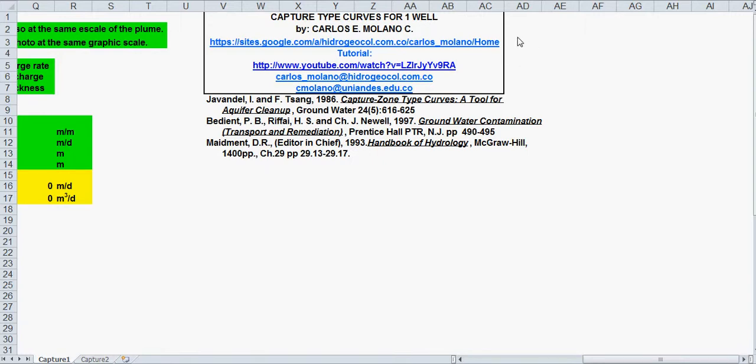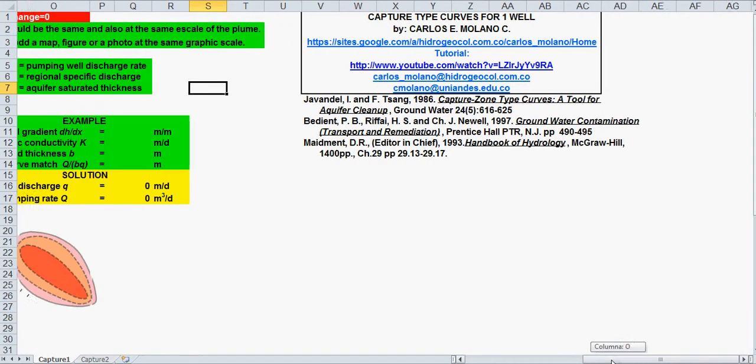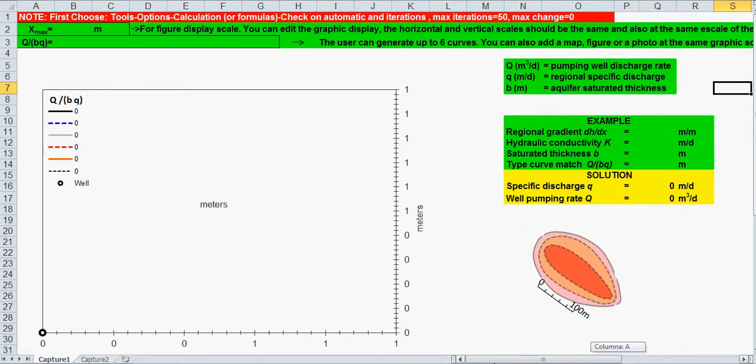You can download this spreadsheet from this website and here you can find a few references where it is described with this technique. The capture type curves can also be used as a tool for aquifer cleanup and also as a part of a risk assessment for RCRA Tier 1, Tier 2 and for optimum pumping rate design.